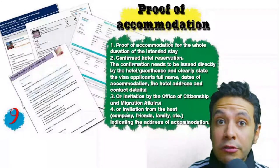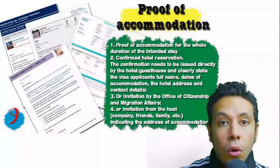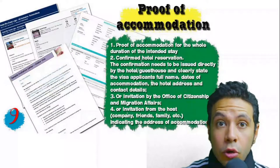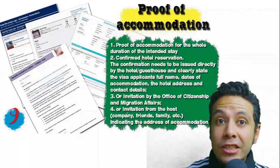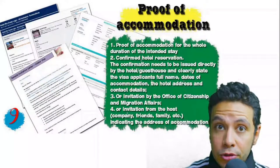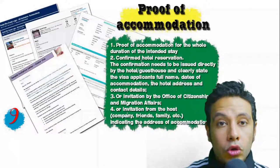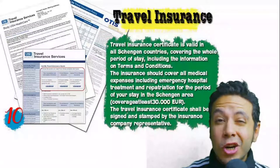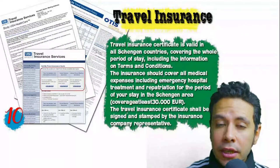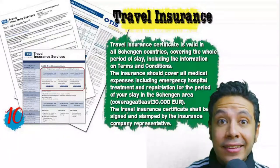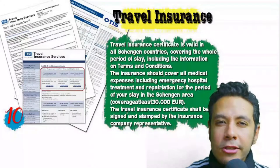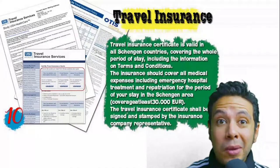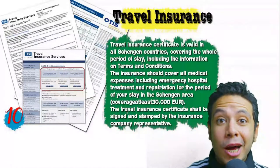You will also need to provide proof of accommodation: a confirmed hotel reservation, an invitation from a host, or an invitation from an organization you are visiting. An initial booking is generally acceptable, but some cases require a confirmed booking. The hotel name, address, and contact number must be mentioned. If invited by a person, the letter of invitation should be mailed to the embassy or submitted by you along with a copy of the inviting person's passport. Many countries, especially in the Schengen area, also require travel insurance from officially accepted companies, with coverage of at least 30,000 euros.